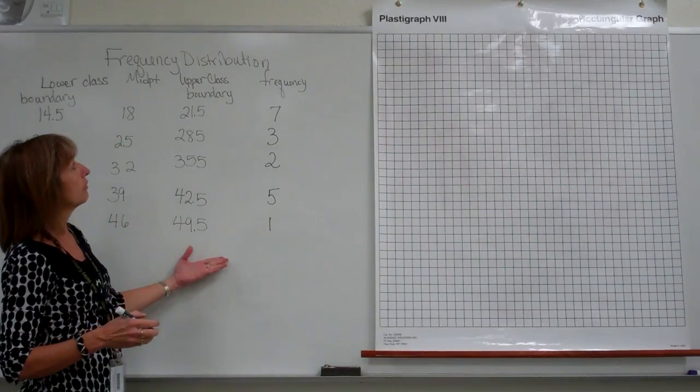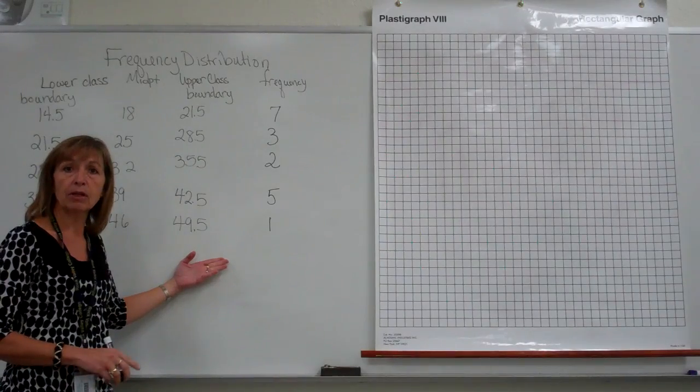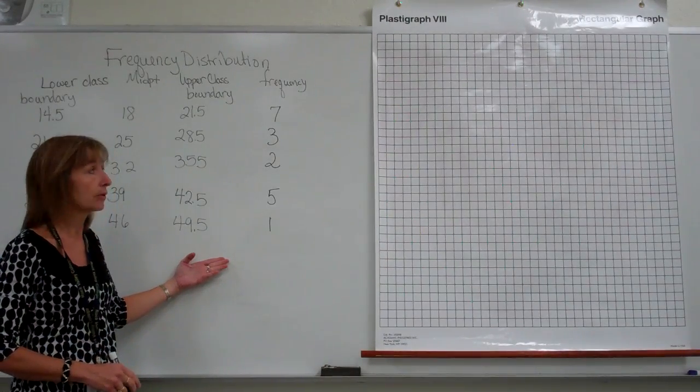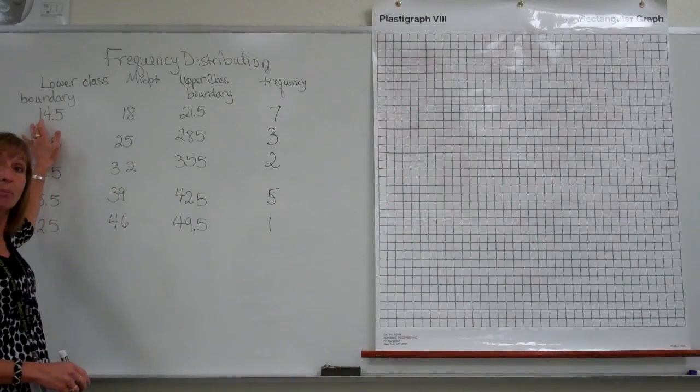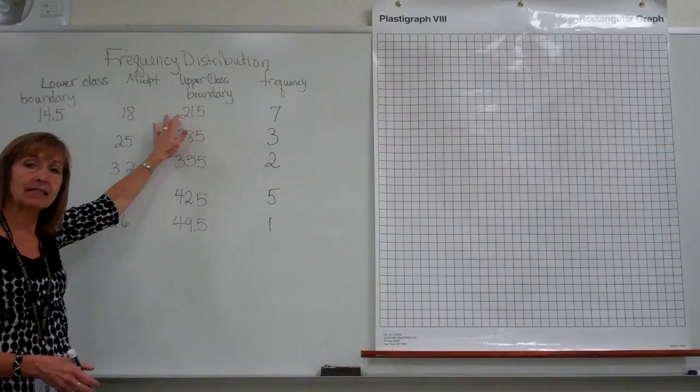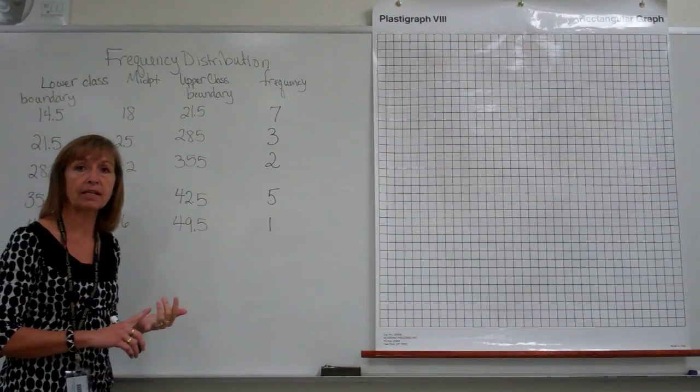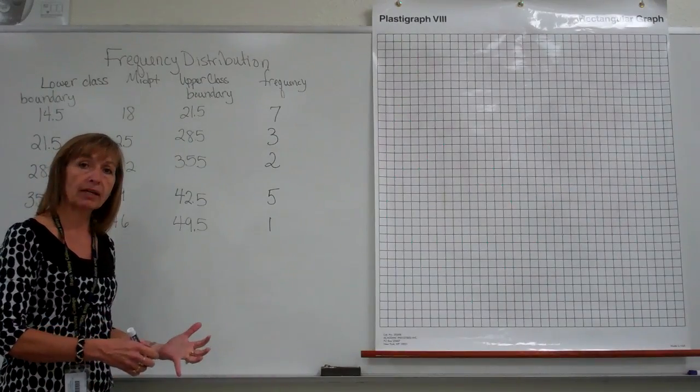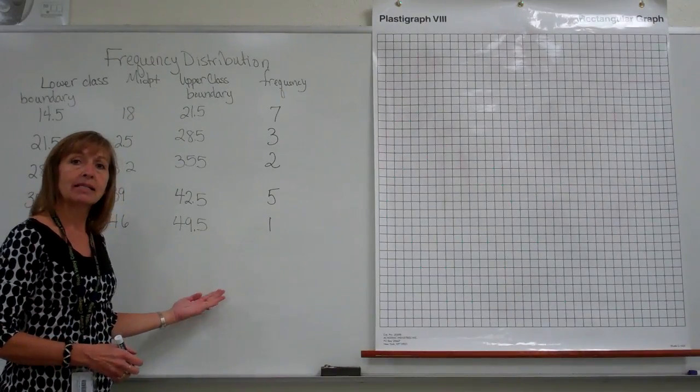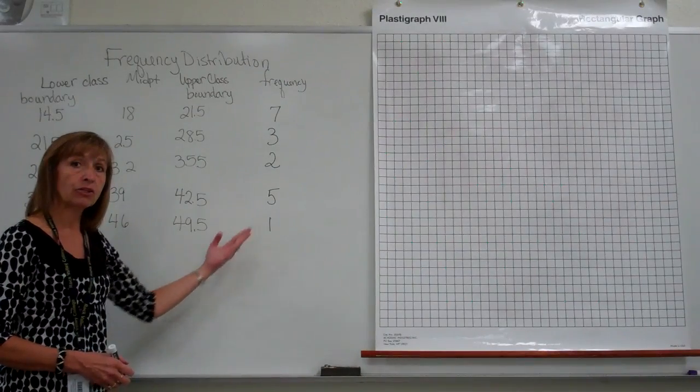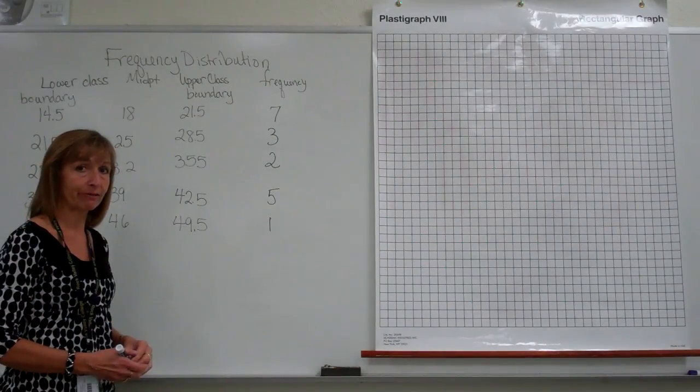So what I've recreated from the frequency distribution table of the previous video clip about frequency distribution tables is the lower class boundary and the upper class boundary for each of the classes of the data set that were in the first two videos about making a frequency distribution table. So we're just going ahead with that same data set, taking the information we had from the frequency distribution table and then drawing a histogram using that information.